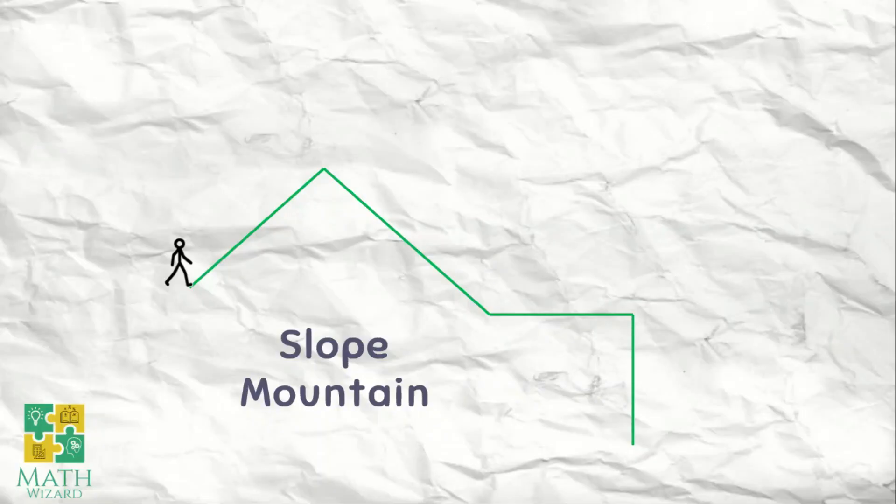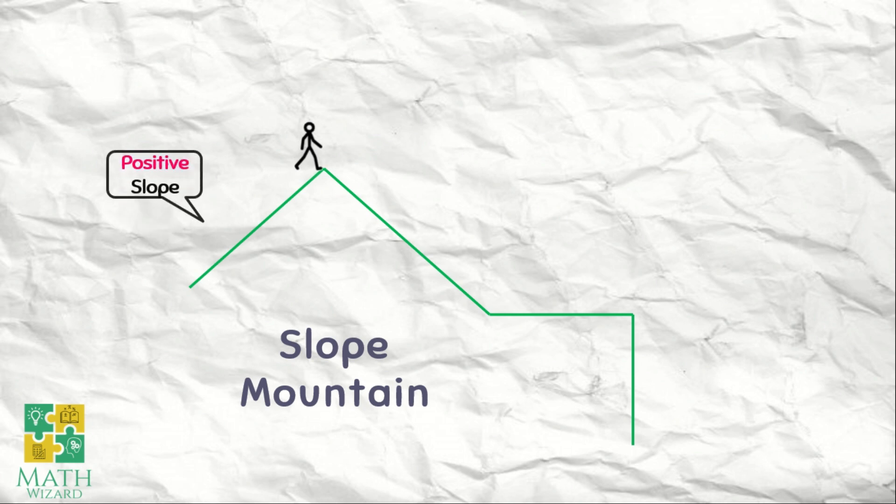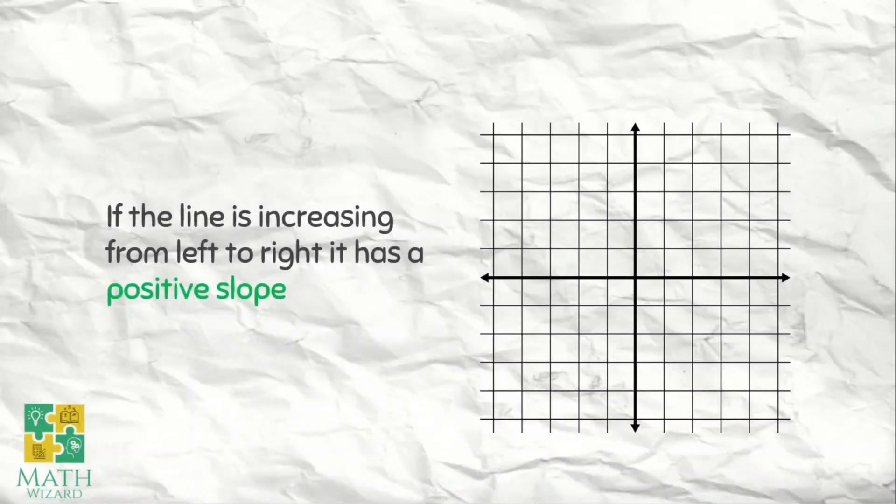Let's start with this one. If you are going uphill from left to right, the slope is positive. Meaning, if the line is increasing from left to right, it has a positive slope.